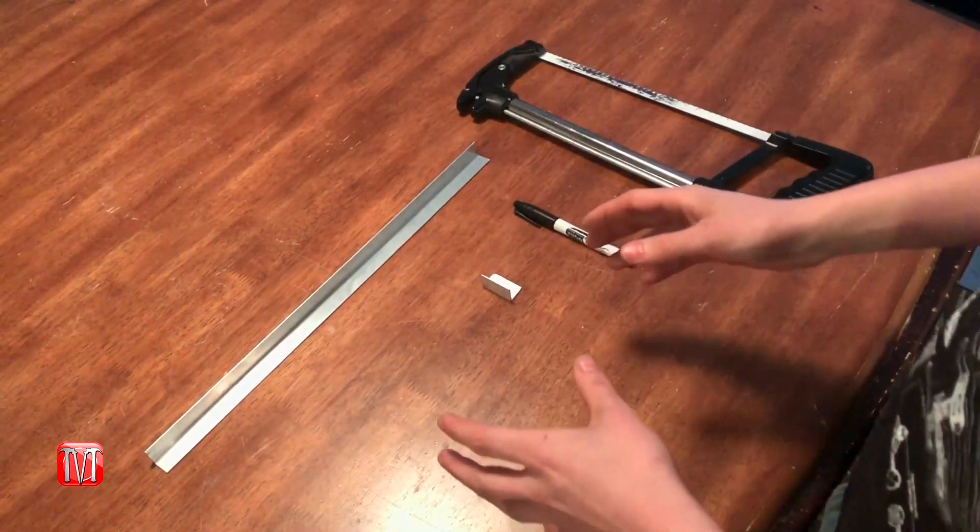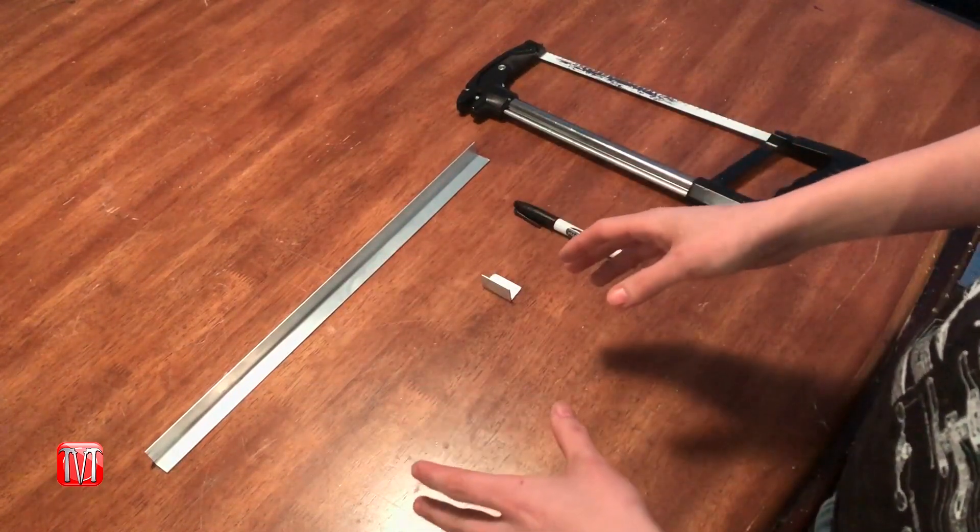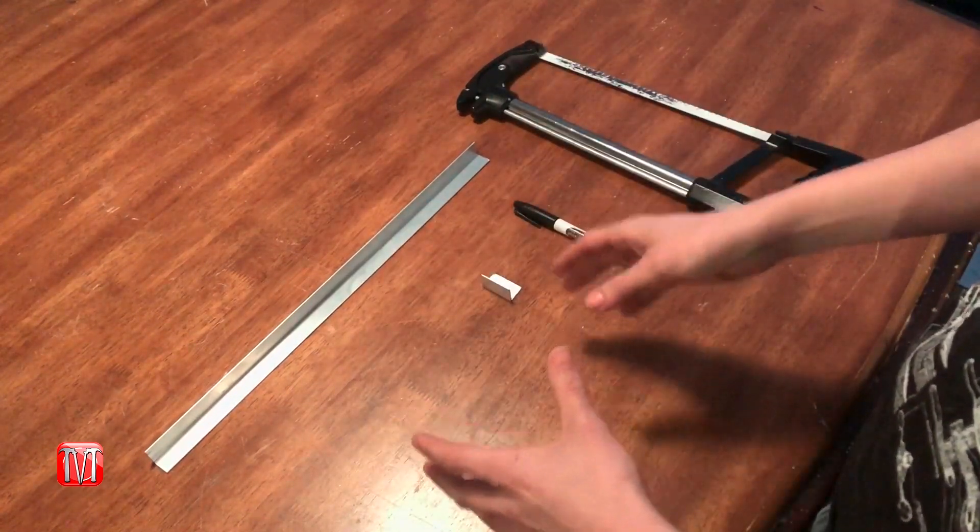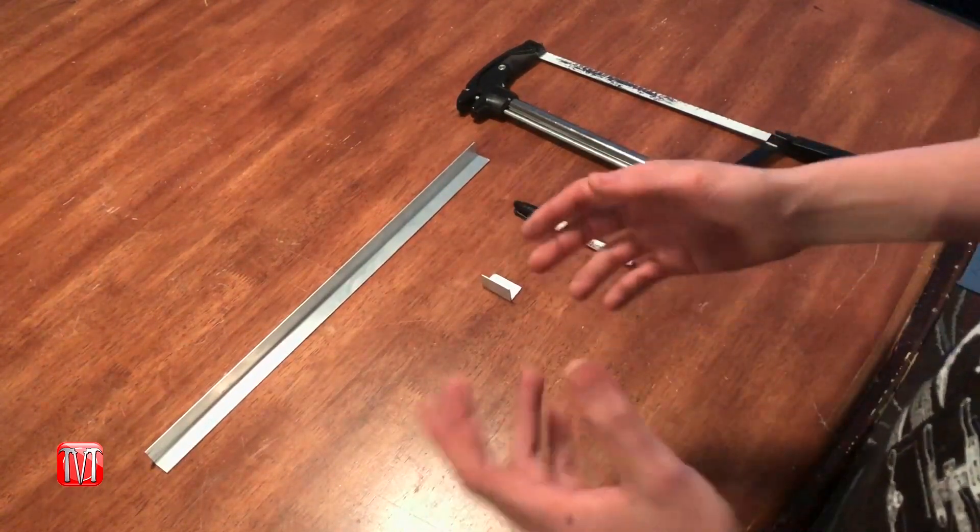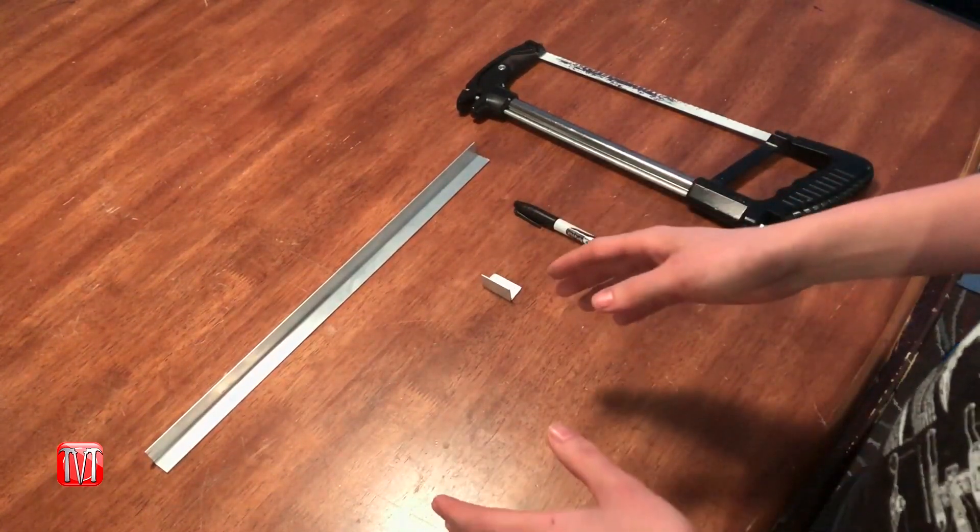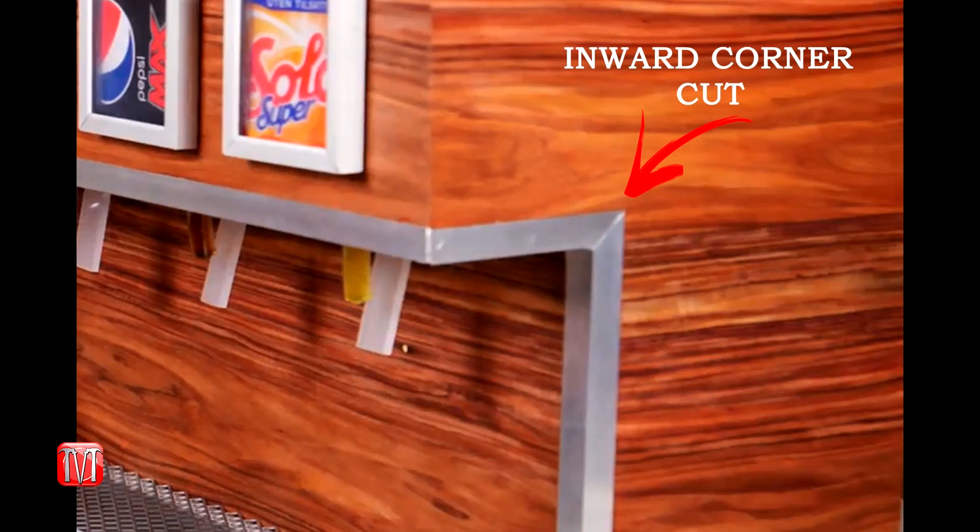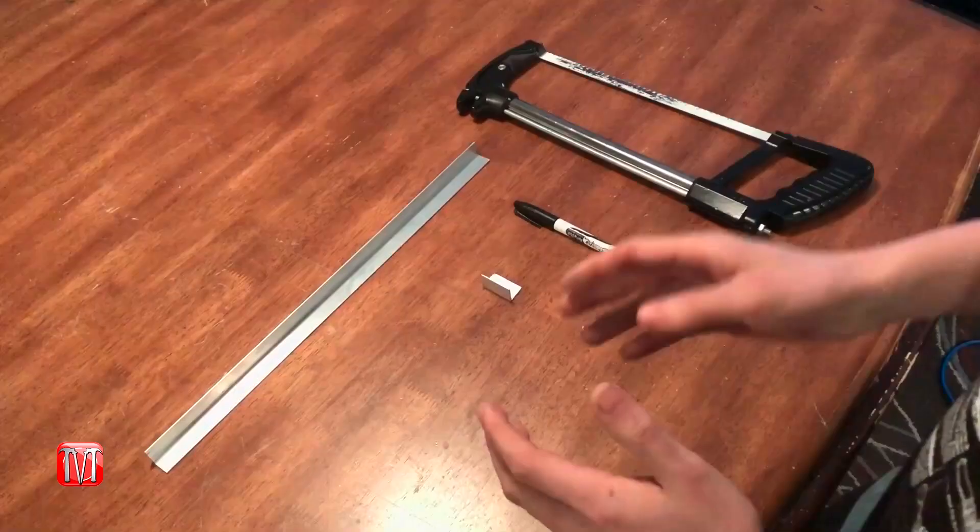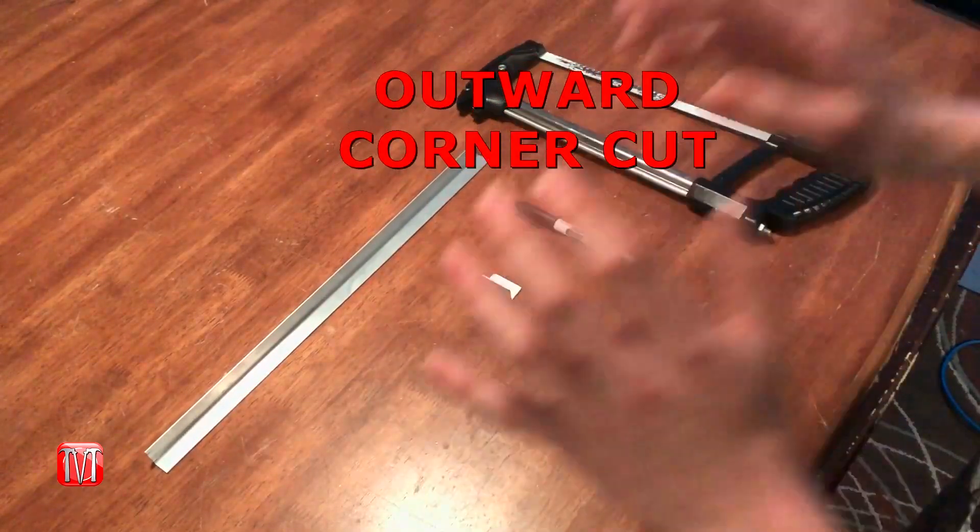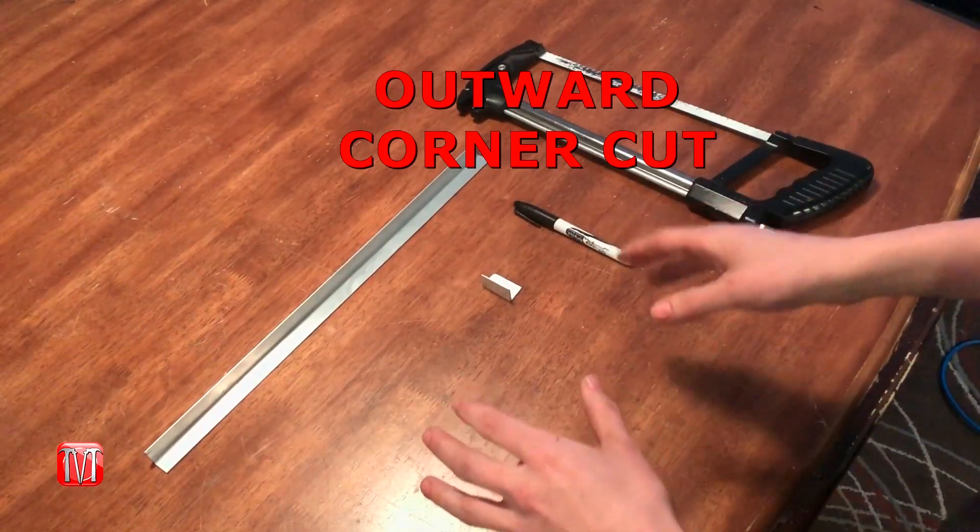The main thing when it comes to cutting a 45 degree angle on 90 degree angle trim is placement. You need to know where this piece is going to be located. What I mean by that is there are two different cuts that you can do: there's an inward corner cut and an outward corner cut. How you can tell is, is the corner facing inward or outward?